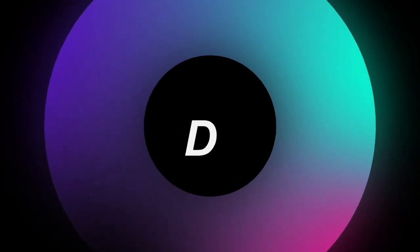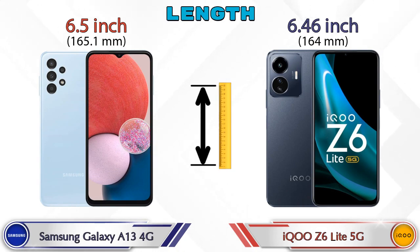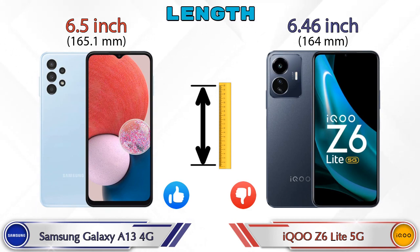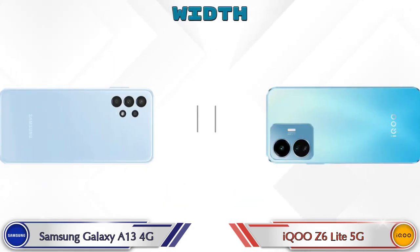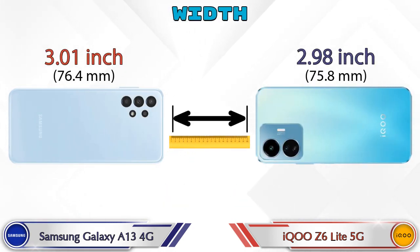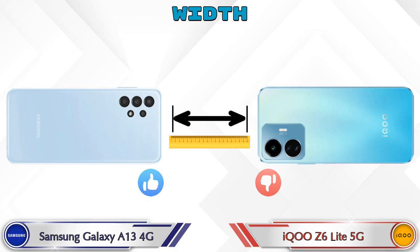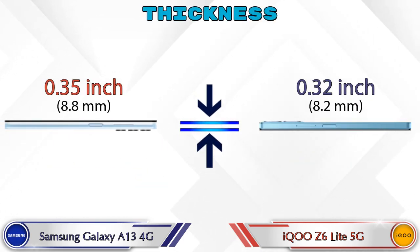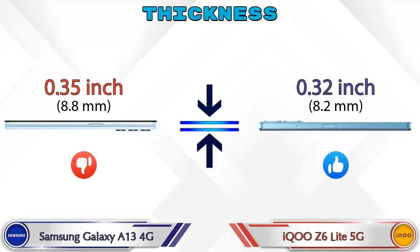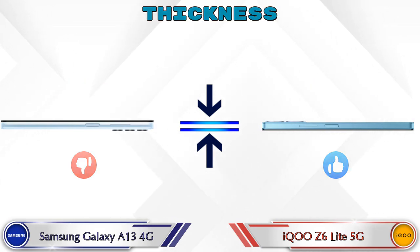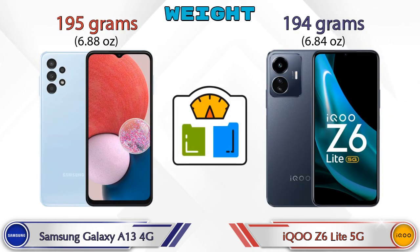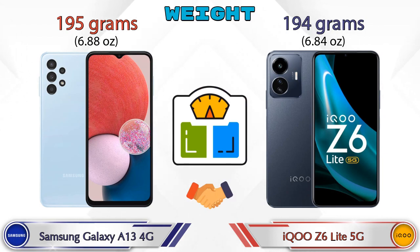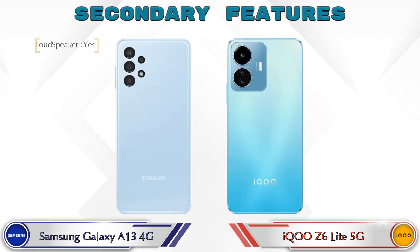Checking dimensions: the Galaxy A13 4G measures 6.5 inches in length, while the Z6 Lite 5G is slightly smaller at 6.46 inches. Width is 3.01 inches on the A13 4G versus 2.98 inches on the Z6 Lite 5G. Thickness is 0.35 inches versus 0.32 inches. Weight is nearly identical — 195 grams for the A13 4G and 194 grams for the Z6 Lite 5G.